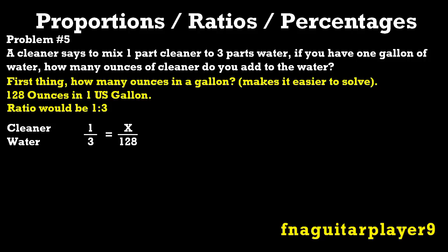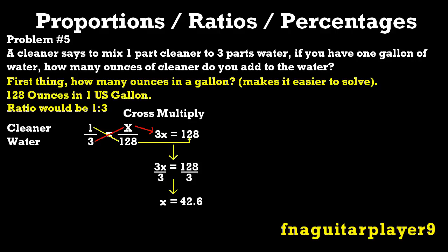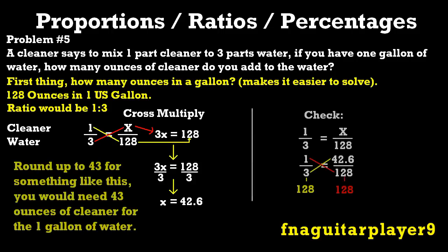So to set it up, you put 1 to 3, which in this case would be the cleaner on top and the water on the bottom, is equal to x over 128. Now we're solving for ounces here. The cleaner's on top, we know the ratio is 1 to 3, but we don't know what the cleaner is, so that's an x. And the water, we know is 3 parts water, and we know we've got 128 ounces of water starting out. Then again, you cross multiply, and you get 3x equals 128. Then you divide both sides by 3, you get the x by itself, and you come out with x equals 42.6. In a situation like this, where it's not real critical, you probably just round up to 43 or just say 42, because it's not that critical. But if you're doing something that needs to be more precise, you would measure out to 0.6, like if you were mixing up a paint or something like that. And again, to check it, you just fill in the x with the answer, and you get to 128, and you cross multiply both sides.